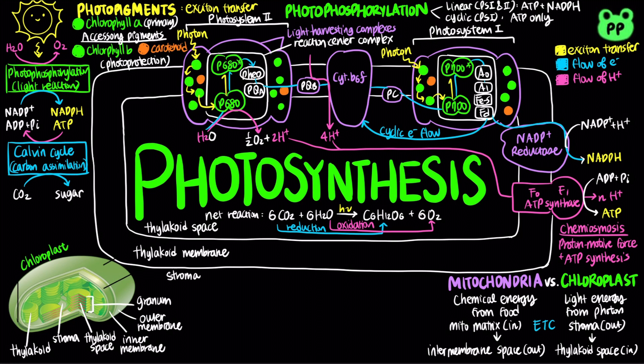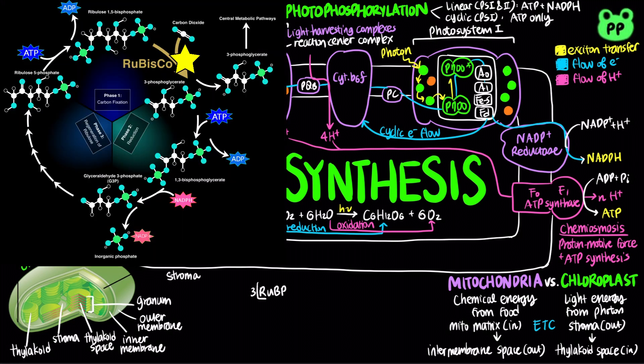The Calvin cycle takes place in the stroma of the chloroplast and involves three phases. During carbon fixation, the enzyme rubisco fixes three carbon dioxide molecules to ribulose bisphosphate, generating six molecules of 3-phosphoglycerate.